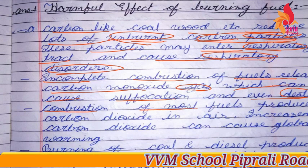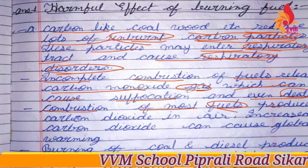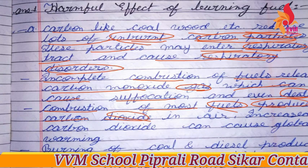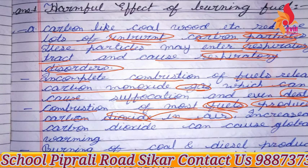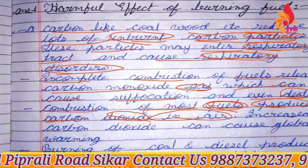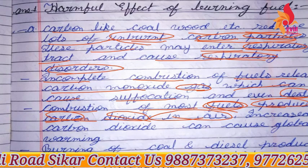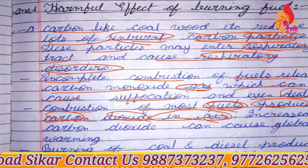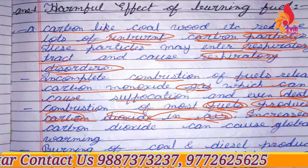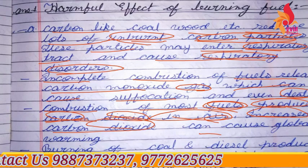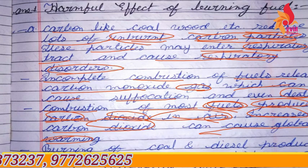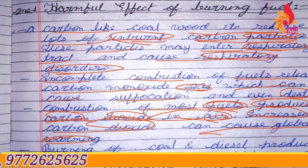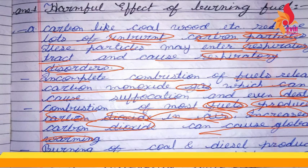Combustion of most fuels produces carbon dioxide. The burning of fuels releases carbon dioxide into the air, and carbon dioxide can cause global warming. As the amount of carbon dioxide increases, global warming will also increase.